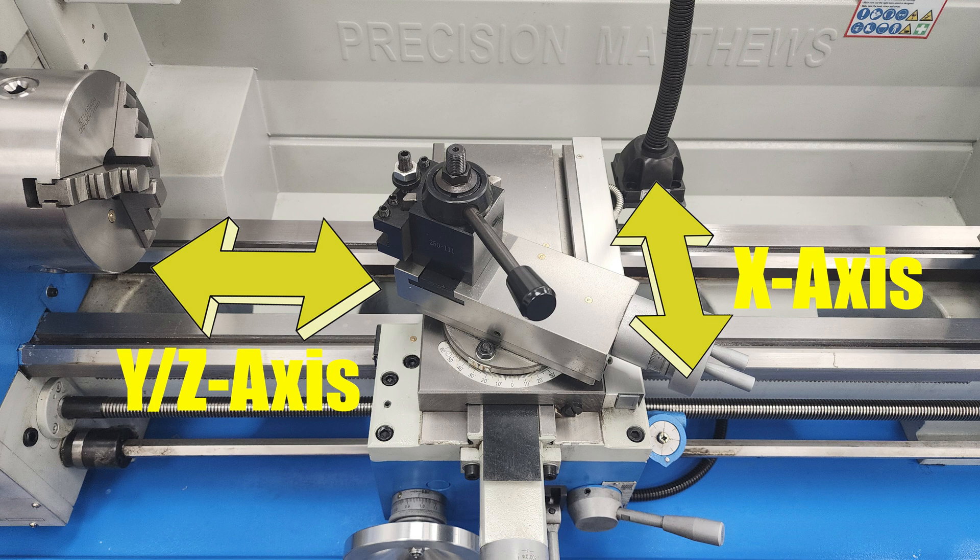Second thing second, the motion along the carriage of the lathe is the z-axis, because the z-axis on any machine is the axis that is parallel to the main spindle. Some DROs list this as the z-axis, some list it as y, and some even put y slash z.